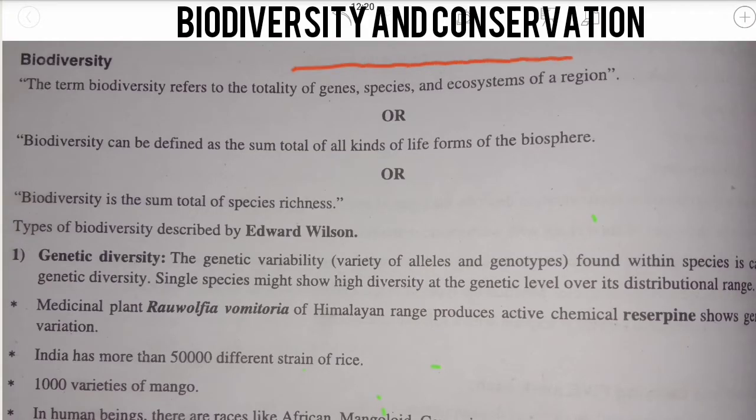Diversity and conservation — this chapter is very important as well as very easy to understand, and you can score marks very easily. This chapter will not only give you marks but also it will make your moral values stronger, and you will be aware about the environment, how to save it, how to protect it.